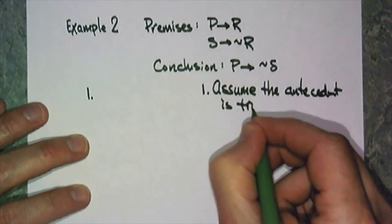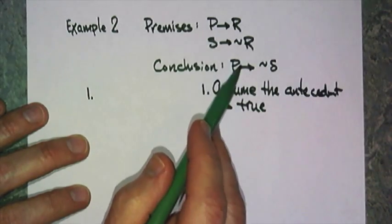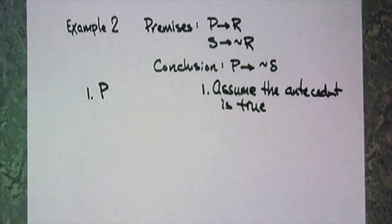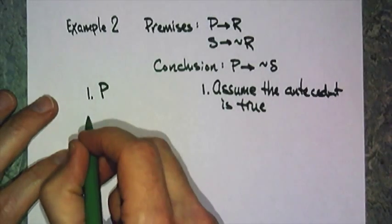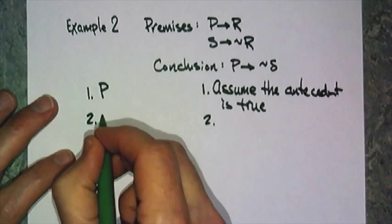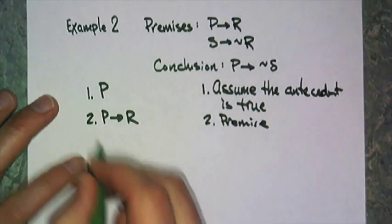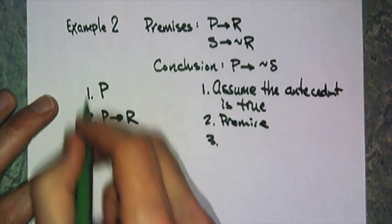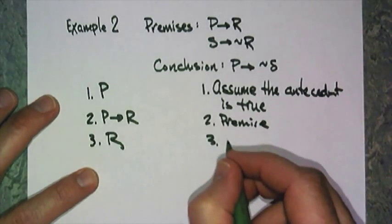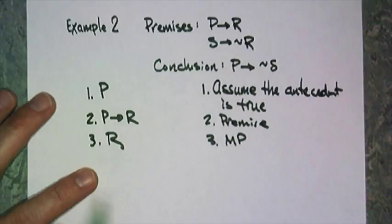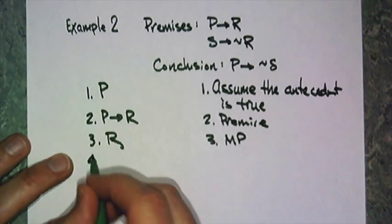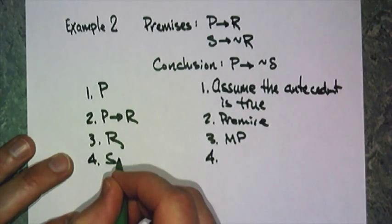Remember the antecedent is the first part, so we're going to assume that P is true. Notice that is not one of my premises, so with a conditional proof you actually get another kind of premise in there, and that's what's really powerful about it. Now if I know that P is true, then I can pull out P then R - that's a premise. I can put those two together and get R, and that's modus ponens.